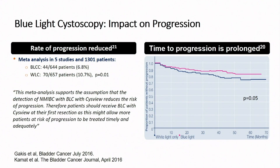Meta-analysis studies have suggested that blue light may also translate into a reduction in progression — perhaps due to a more complete TUR and eradication — and also delay time to progression. That's somewhat borderline but makes sense if you completely eradicate, for example, a T1 tumor.